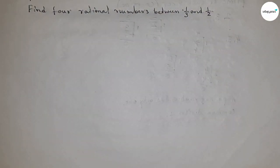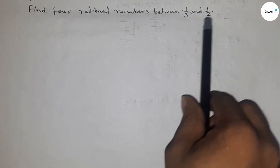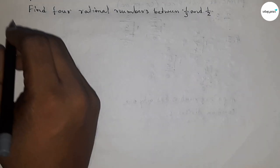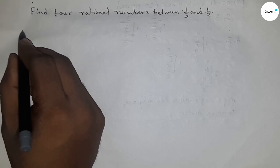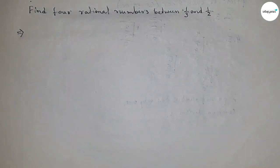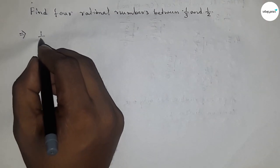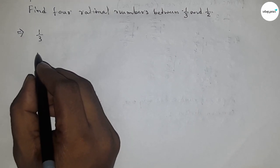Hi everyone, welcome to Assessor Classes. Today we have to find four rational numbers between 1/3 and 1/2. So first of all, write down the given rational numbers here: 1/3 and 1/2.